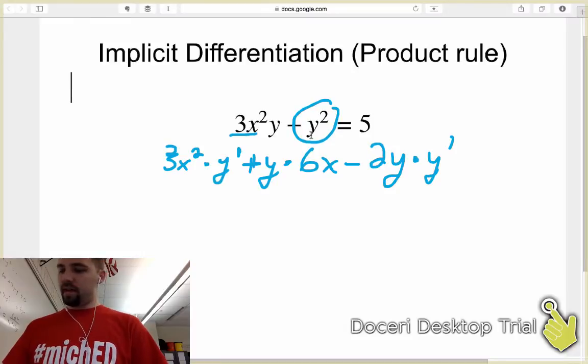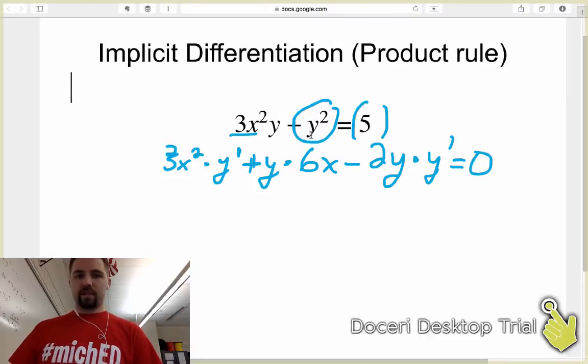Okay, so there's that, and then the derivative of the 5, well, the derivative of the 5 is just 0. Okay, so that's where we're at after the first step.